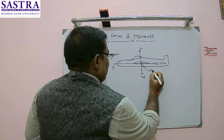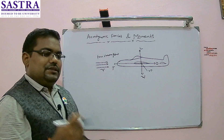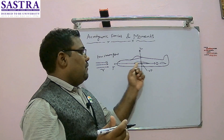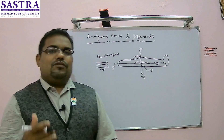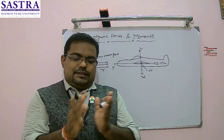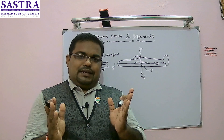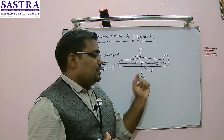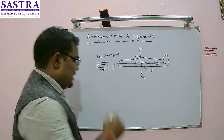The center of pressure is a point on the chord line of the airfoil at which the net resultant force is supposed to act. The net resultant force is the combination of lift and drag, and both will be acting at this point — this is the center of pressure.